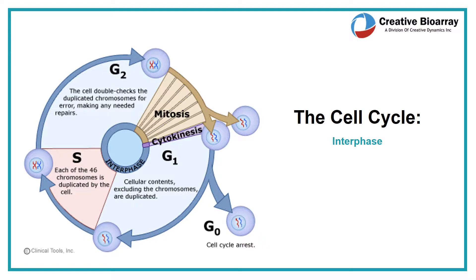The G stands for gap, with G1 the first gap and G2 the second gap. During G1, the daughter cells almost double in size, make new endoplasmic reticulum, new components of the cytoskeleton, new mitochondria, etc.